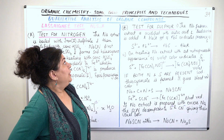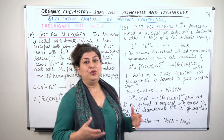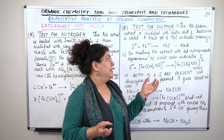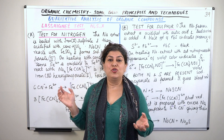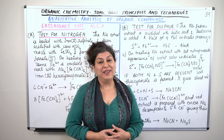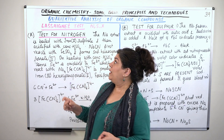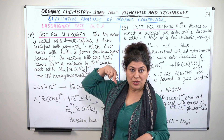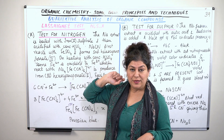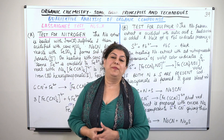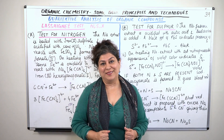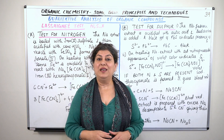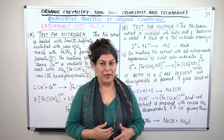So this was how we use Lassaigne's extract to identify the presence of nitrogen and sulfur. In the next video, we will use Lassaigne's extract to identify halogens and phosphorus. I will wrap up the video here.